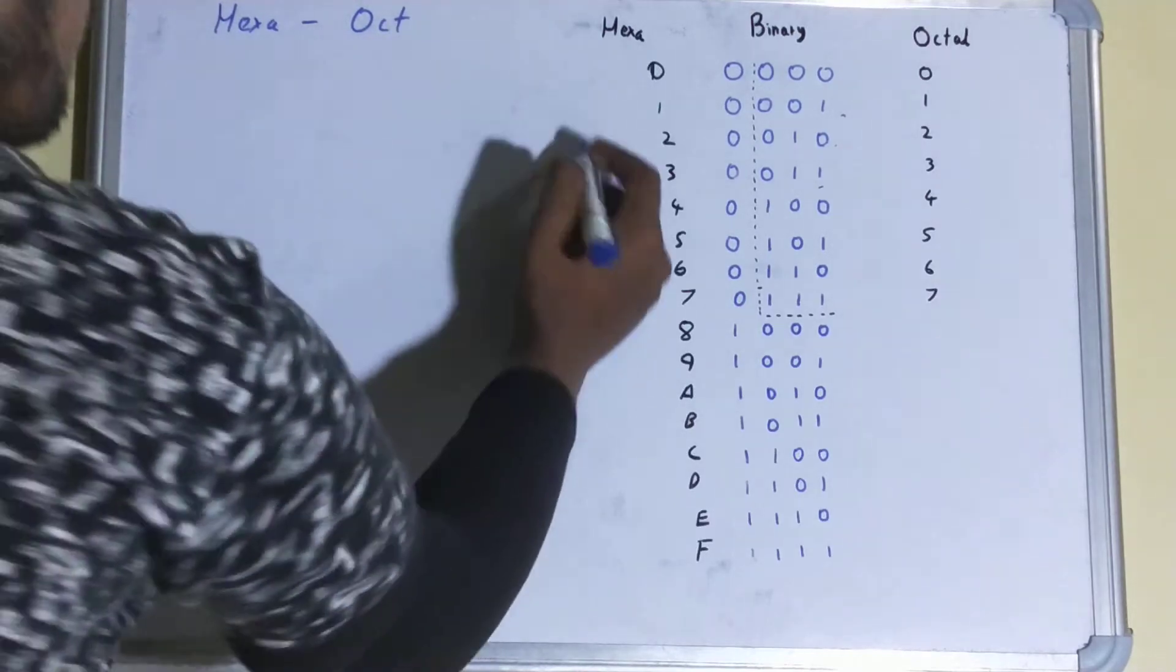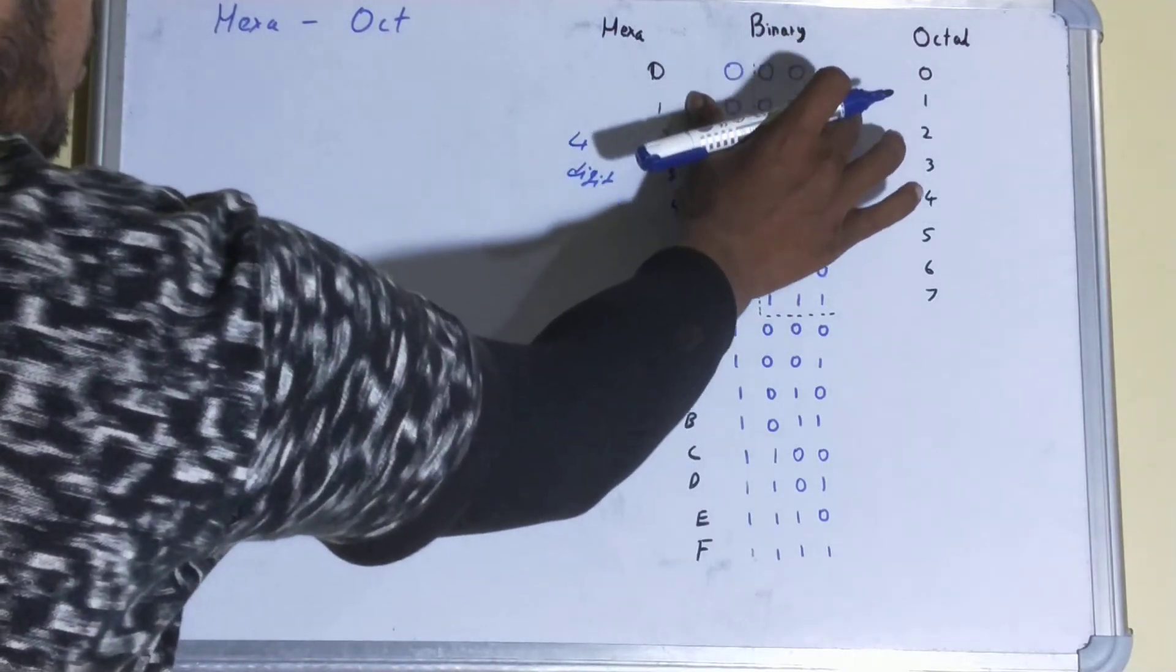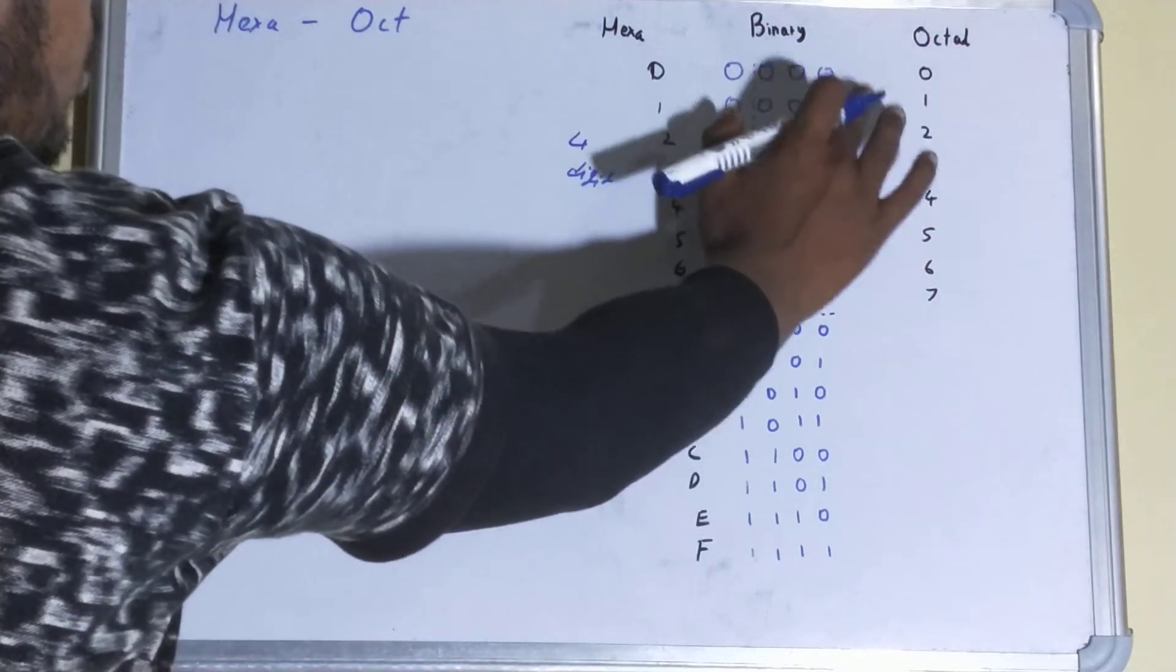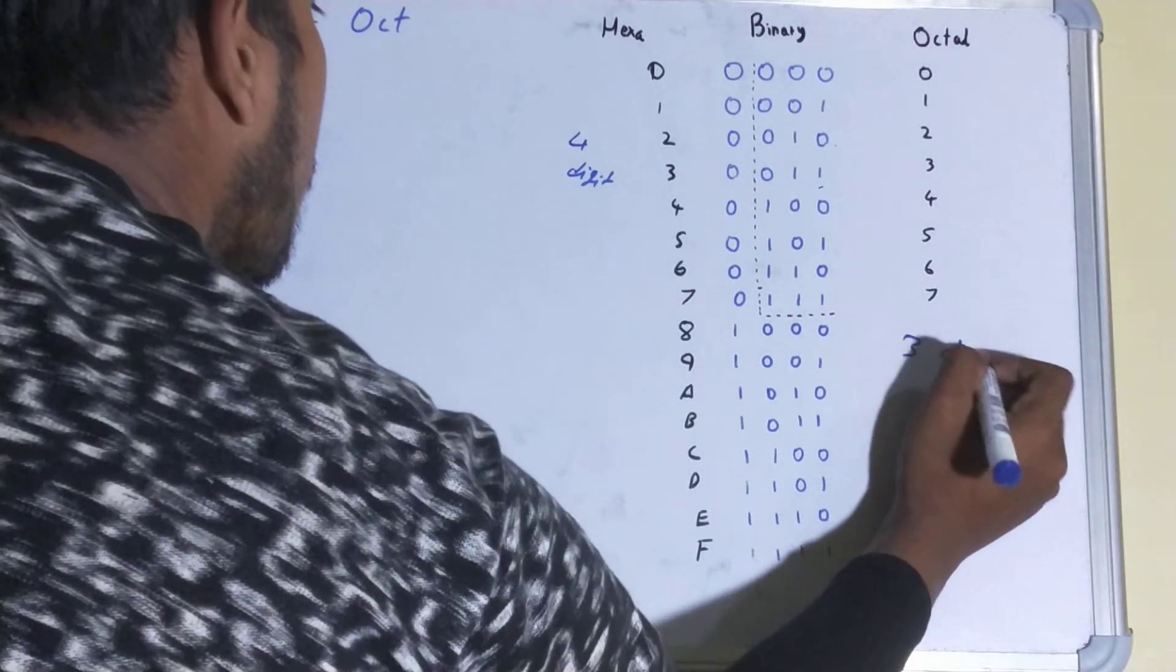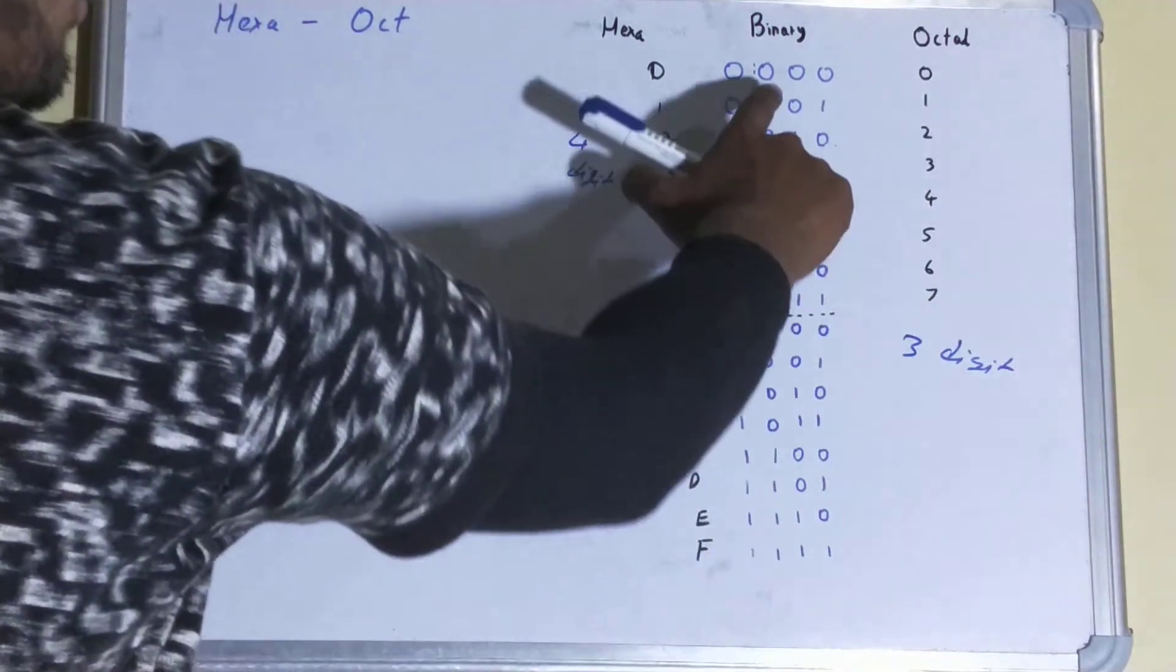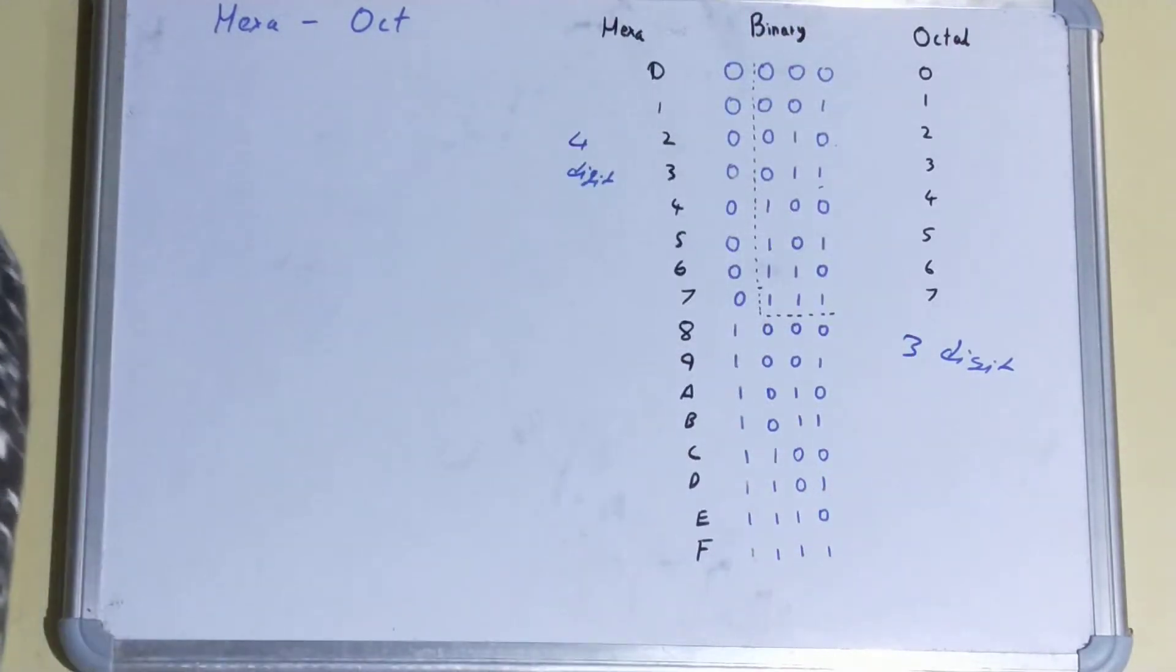For hexadecimal it is a four digit number, so we can take four digits of this binary. But in case of octal it is a three digit, so what we'll do is we will only pick these three digits. That's why I've drawn this line over here.